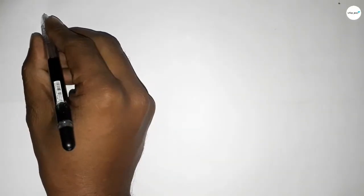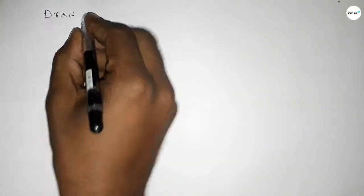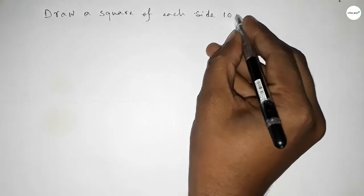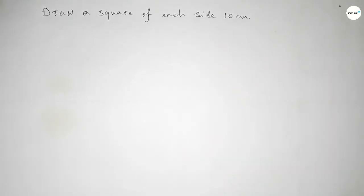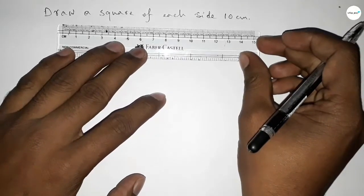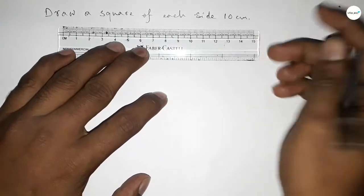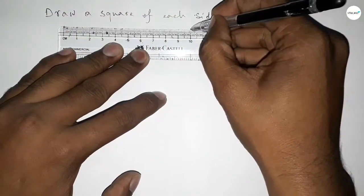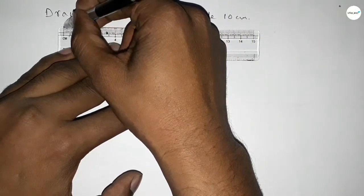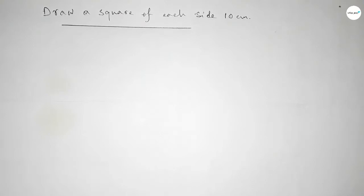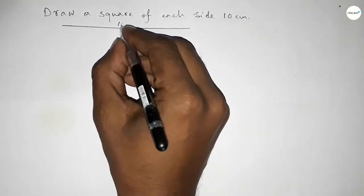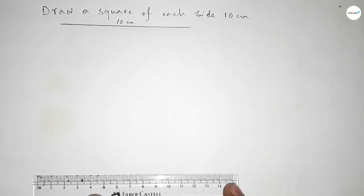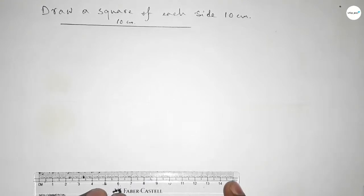Hi everyone, welcome to SHR Classes. Today in this video we have to draw a square of each side length 10 centimeter. First of all, drawing here the given length 10 centimeter — zero, one, two, three, four, five, six, seven, eight, nine, ten. So this is 10 centimeter length.